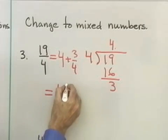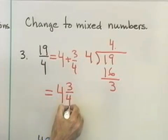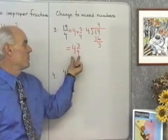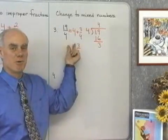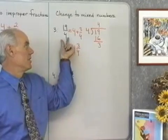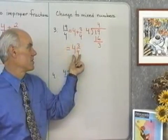Using mixed number notation, then, that's the same as 4 and 3/4. So, 4 and 3/4 is the mixed number I get when I change 19/4 to a mixed number. This is an improper fraction, this is the mixed number.